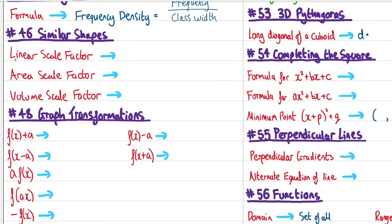Similar shapes. Find the linear scale factor k by dividing corresponding lengths (e.g., height of one object by height of the other). For areas, the scale factor is k². For volumes, the scale factor is k³.